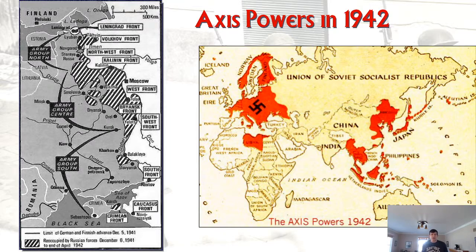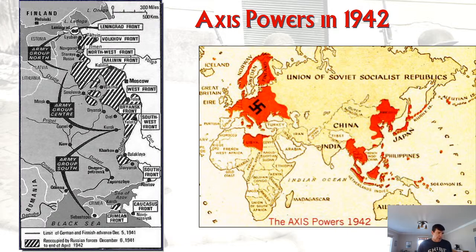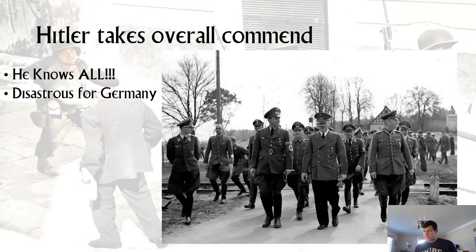Japan at their highest extent, and remember the Germans had gotten to the gates of Moscow. So now we've set up the war — and now we have to finish it. Hitler, disgusted that they did not take Moscow, took overall command. He didn't trust his generals anymore. Because he knows everything and everybody else is an idiot — that's one of the things about social Darwinism and fascism: the idea that the leader knows all, and eventually they believe it.